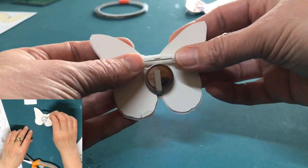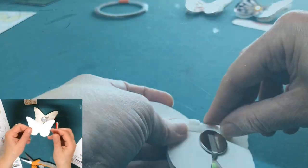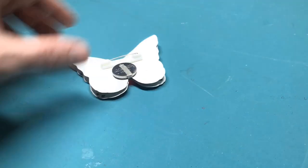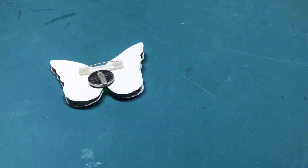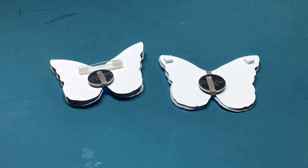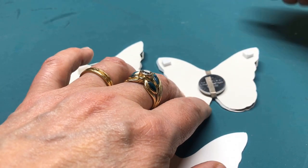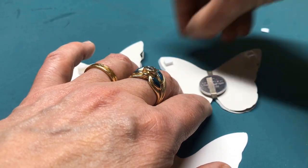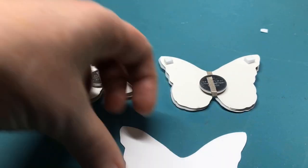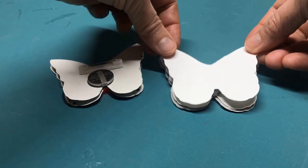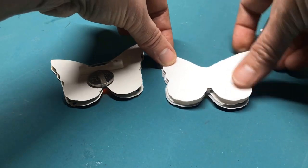The last step before wearing your pin is to add a pin back. If you have room above the battery, you may apply it there. Or if you prefer, you may use the optional backing layer. To do so, add two foam squares to the wingtips of your circuit piece, apply the optional backing, and then adhere the pin.